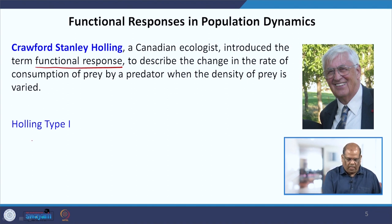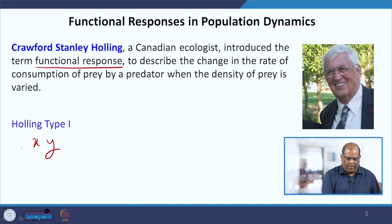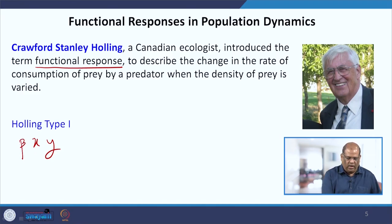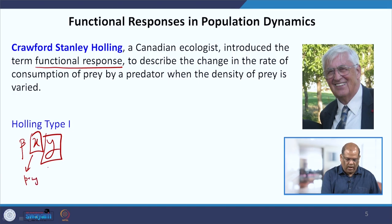If you have a prey and a predator and the interaction is happening at a rate beta, this is a Holling Type 1 function where the two appear linearly as a product — this is the prey and this is the predator.